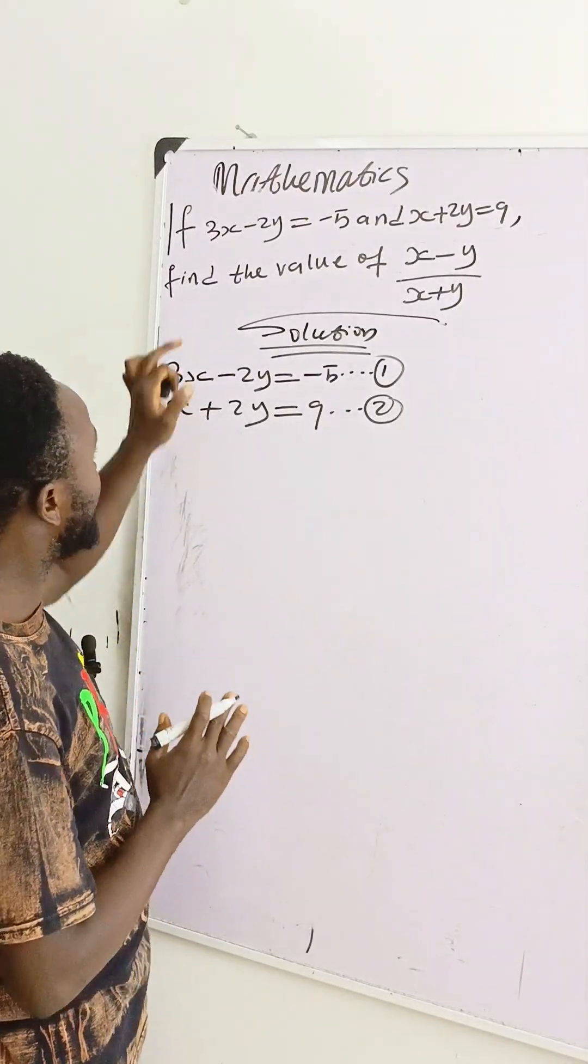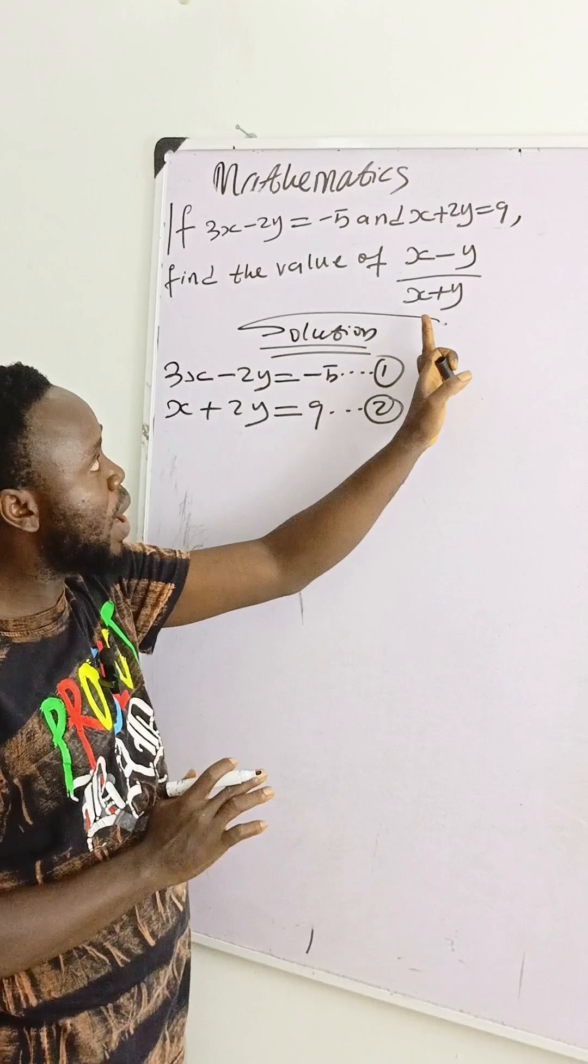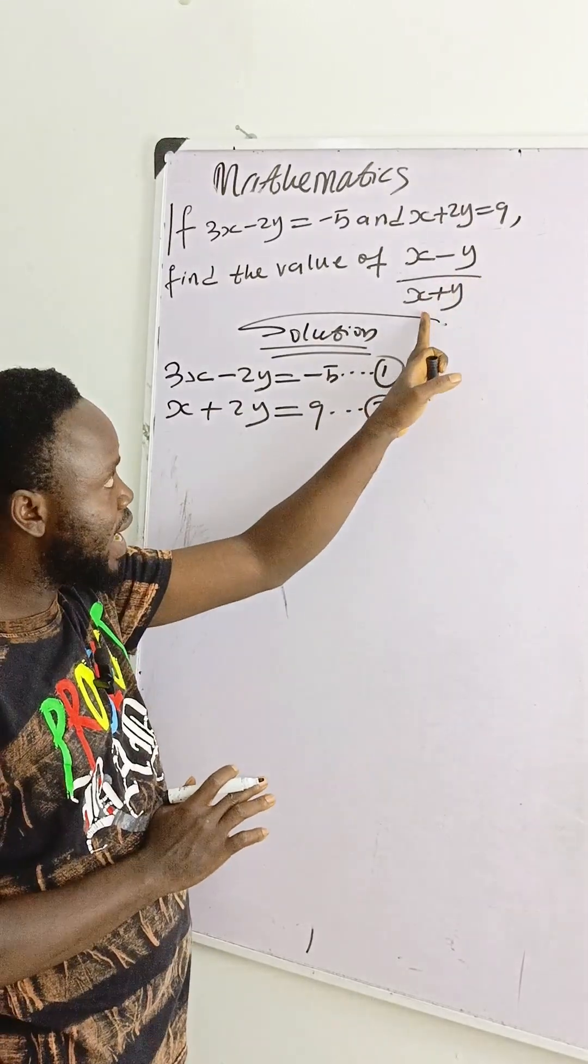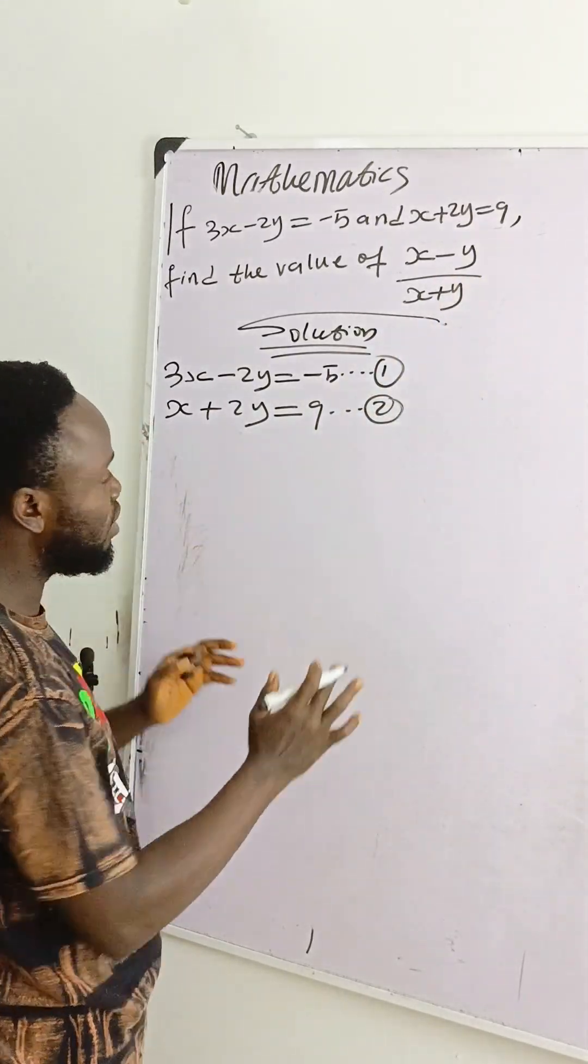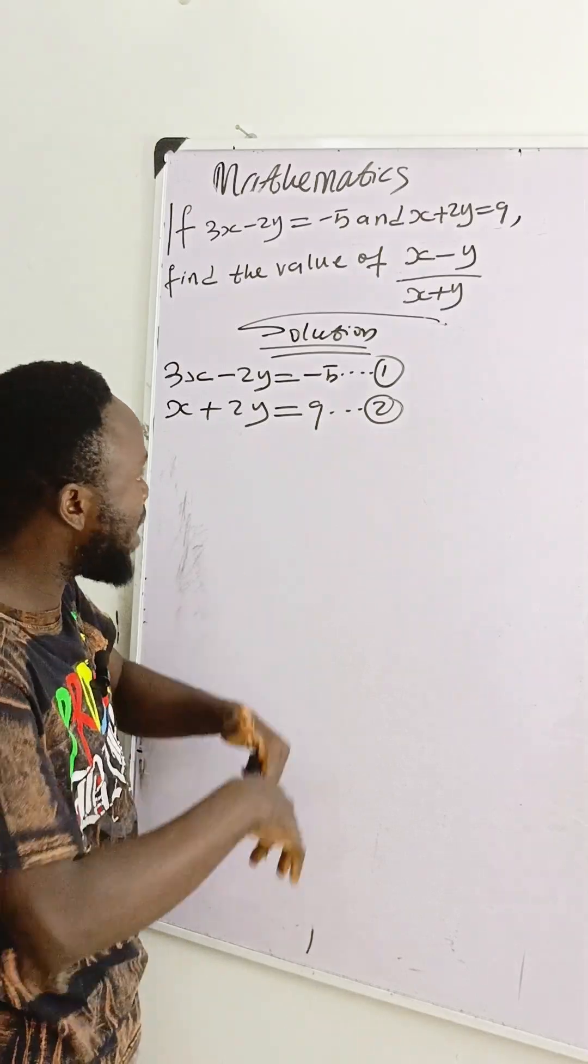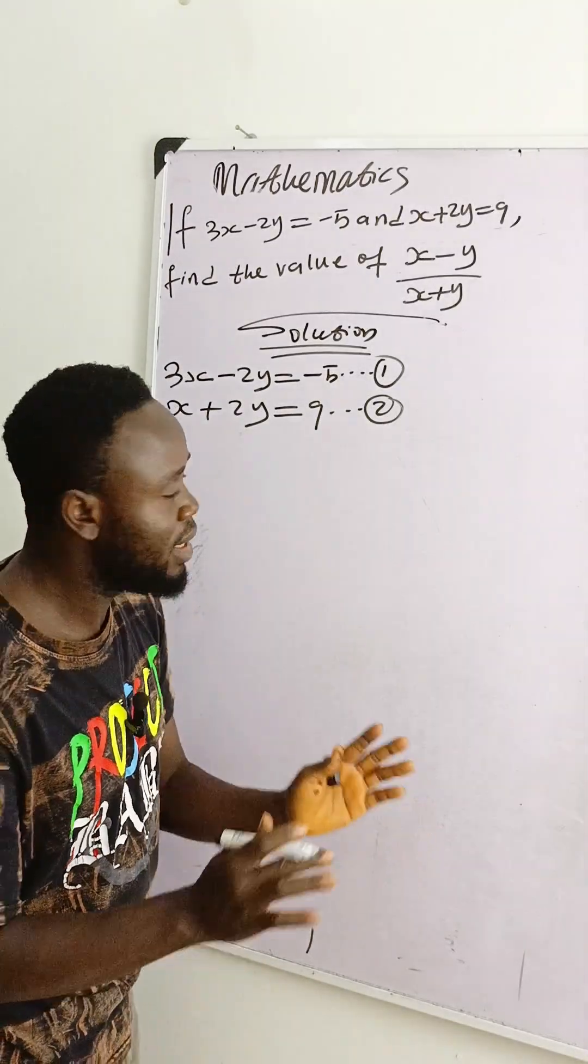And the equation said, find the value of x minus y over x plus y. Not just the value of x and y. But before we do that, let's first of all find the values of x and y.